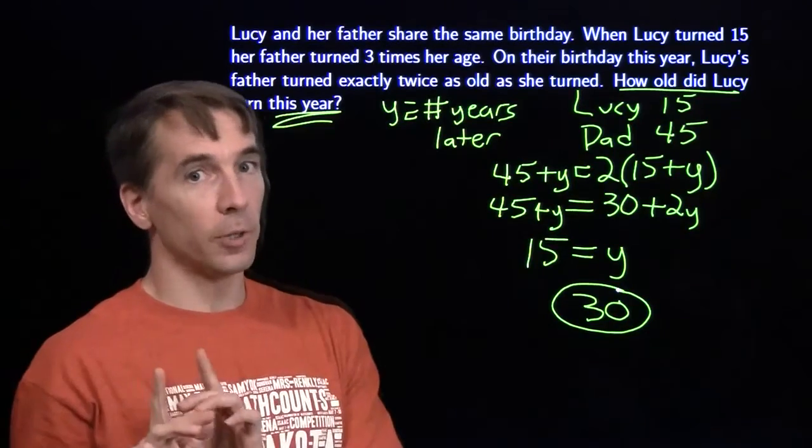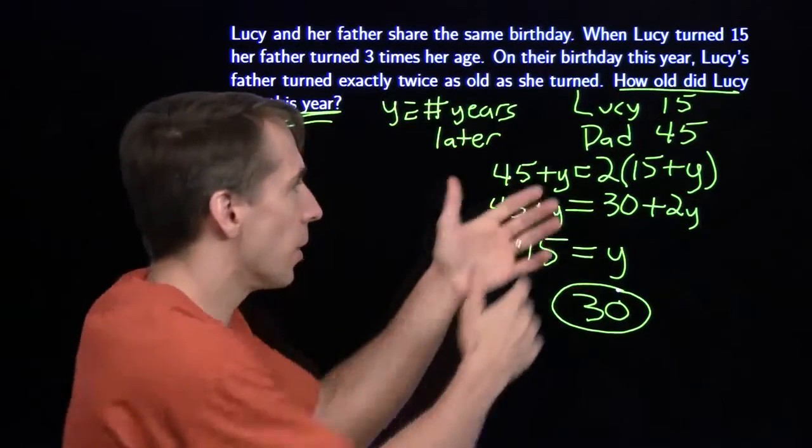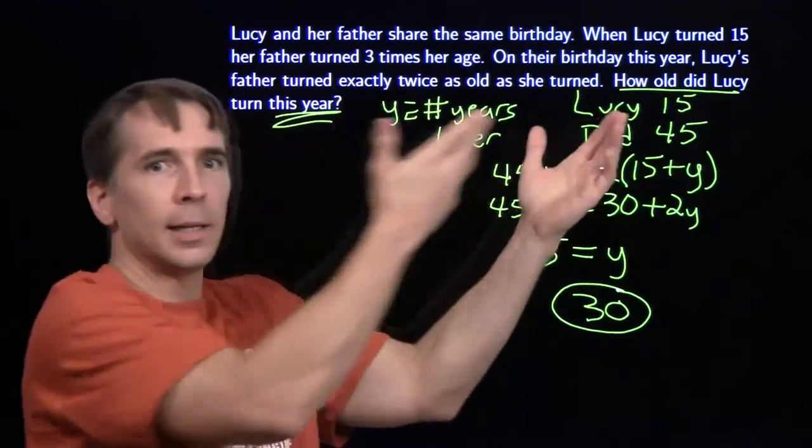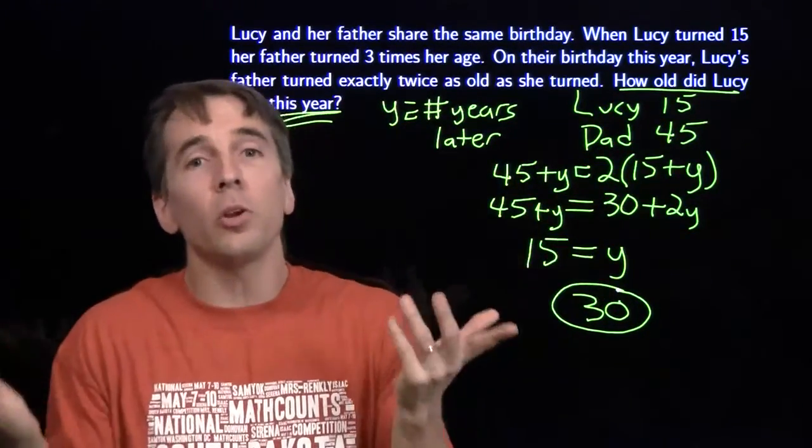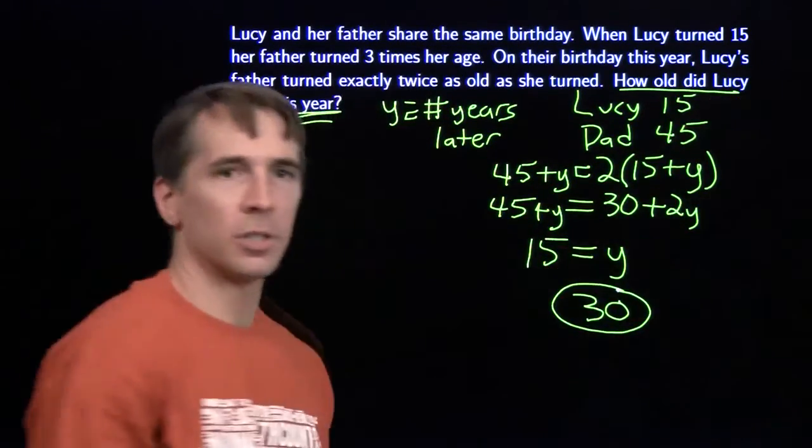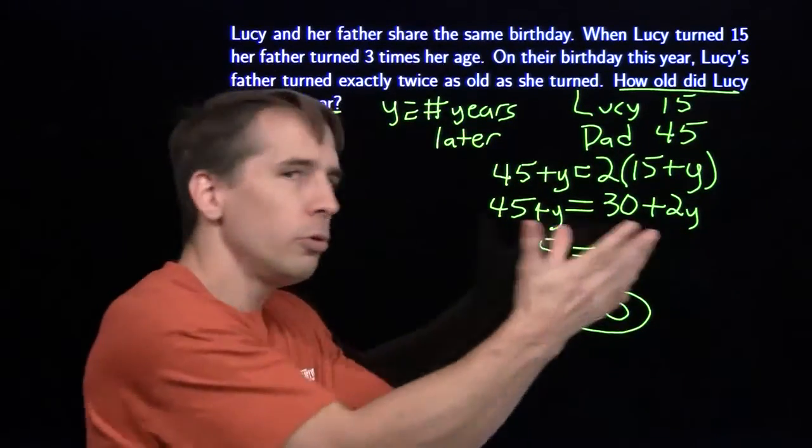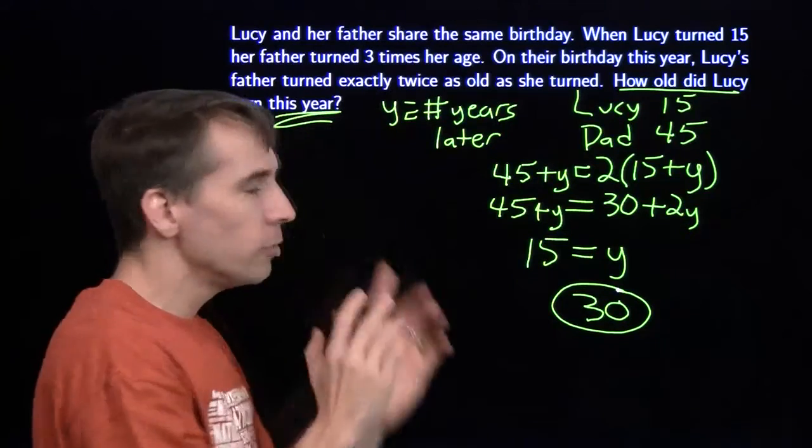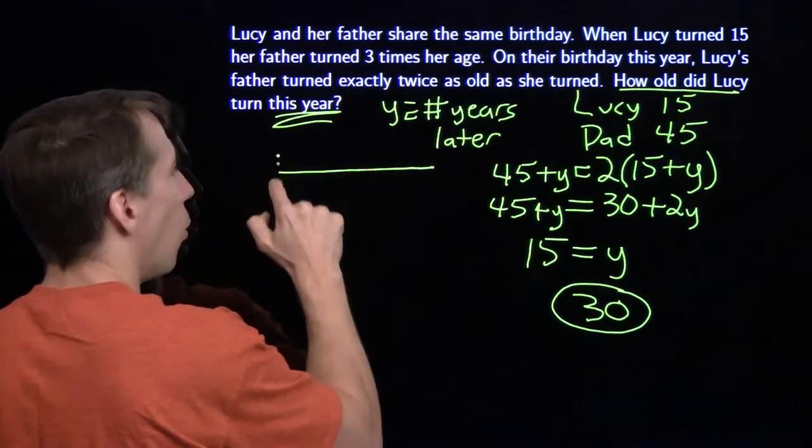Once again, we're going to look for another way to do this problem. You see that things are changing here. We have a starting state, and then they get older. Things change. When things change in a problem, we look for things that stay the same. What stays the same here is this difference. They're always going to be 30 years apart in age. So now we move to the present. I'm going to draw a little line here and say this whole line is dad. And this part is Lucy.